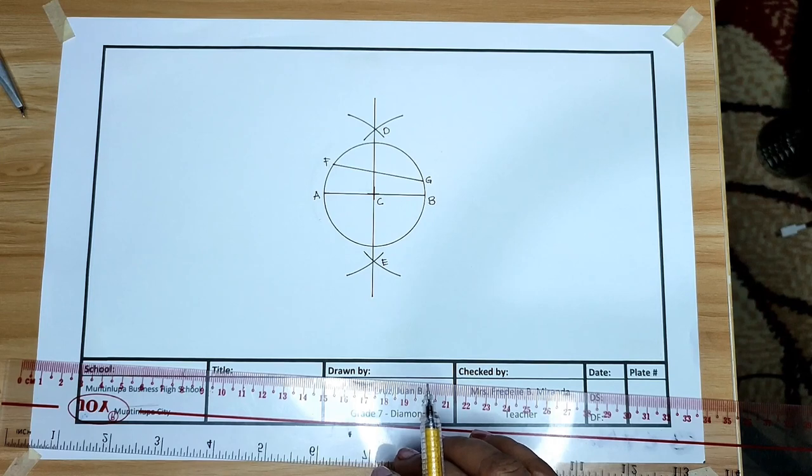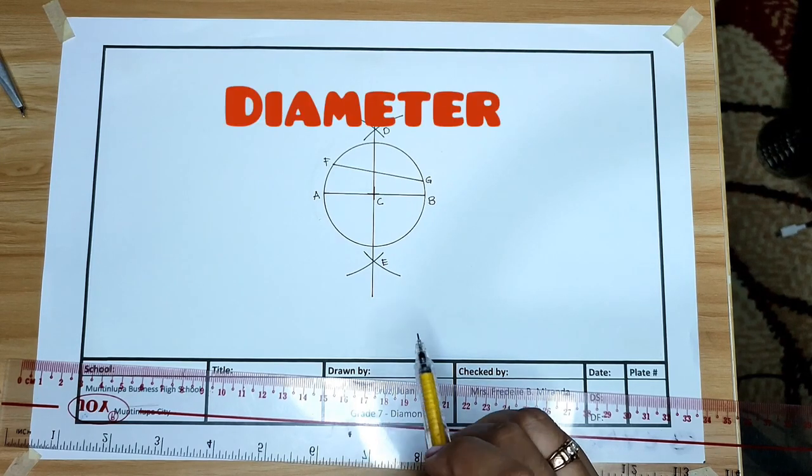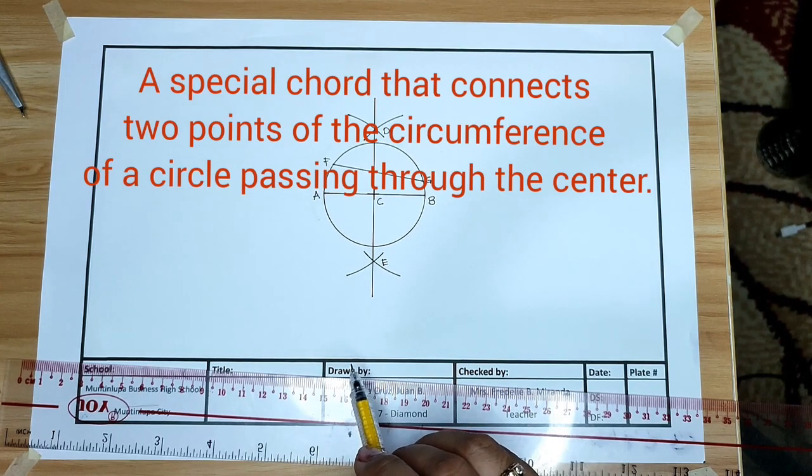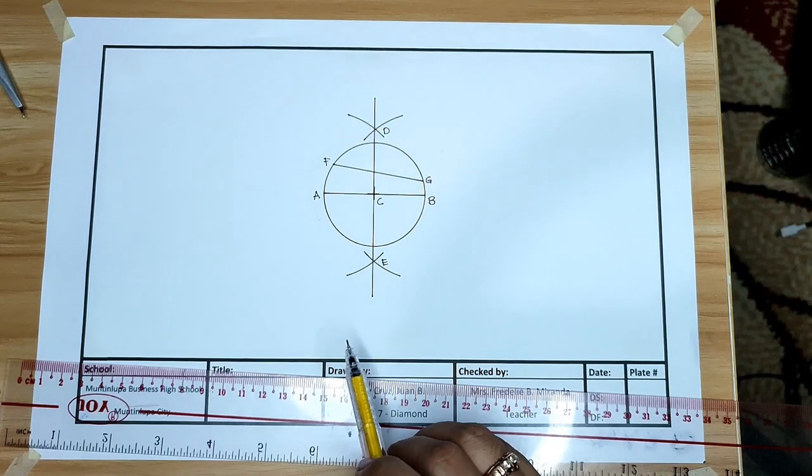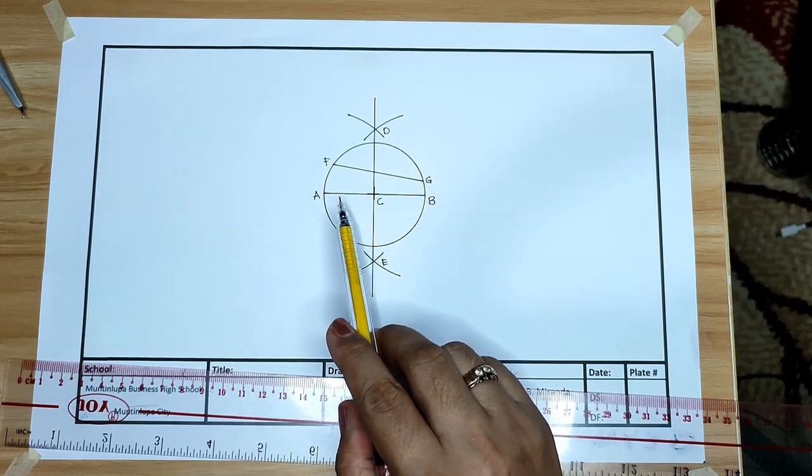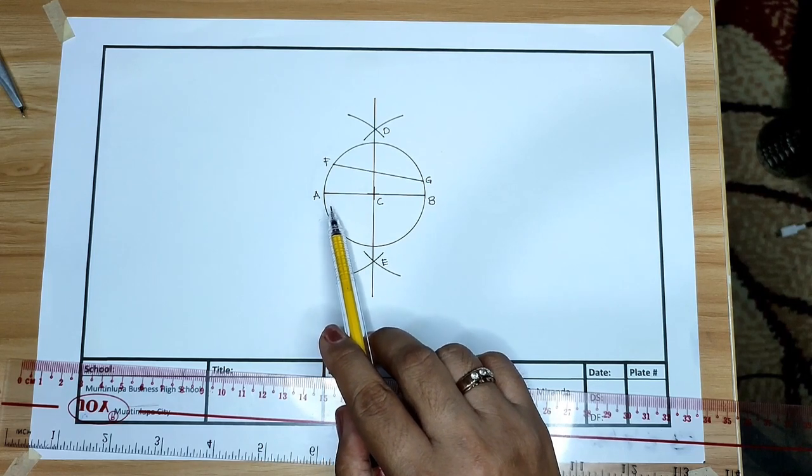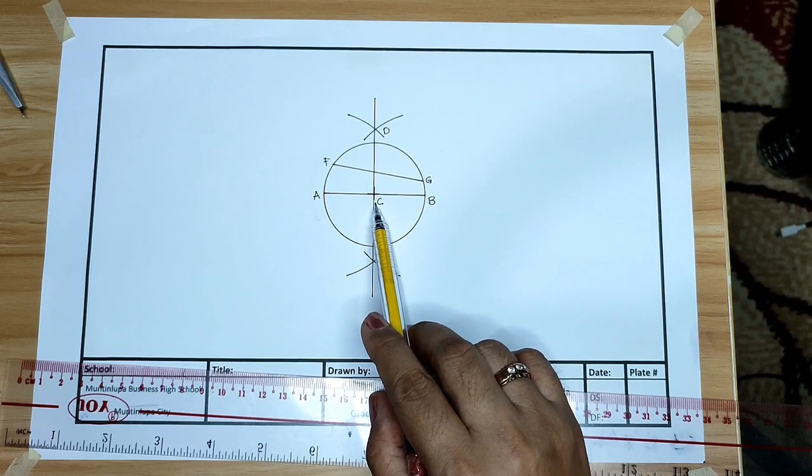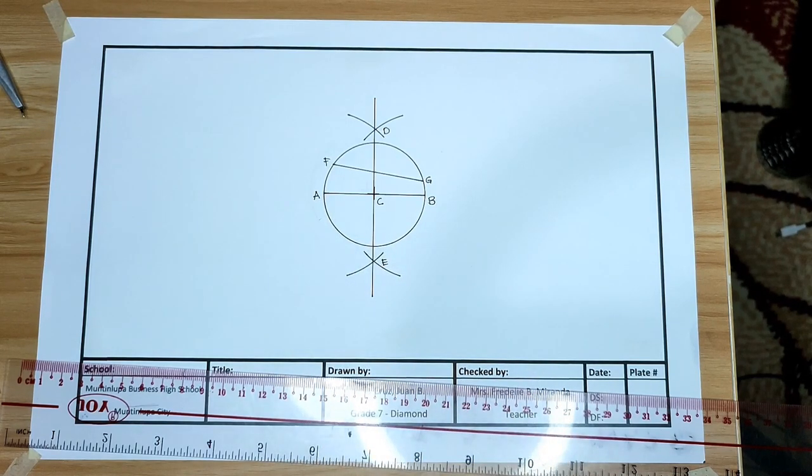Next is diameter. It is a special chord that connects two points of the circumference of a circle passing through the center. For example, line AB that passes through the center.